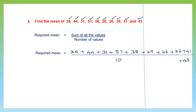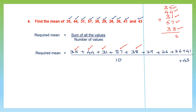Let's begin to add. So: 35 plus 44 plus 31 plus 57 plus 38. Adding the units: 5 plus 4 is 9, plus 1 is 10, plus 7 is 17, plus 8 is 25 — carry 2. Then the tens: 2 plus 3 is 5, plus 4 is 9, plus 3 is 12, plus 5 is 17, plus 3 is 20. So here we have 205.